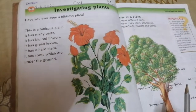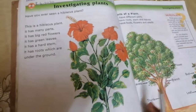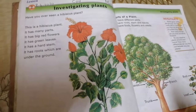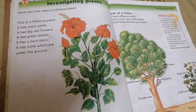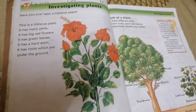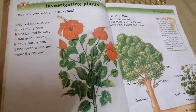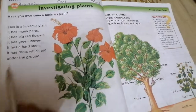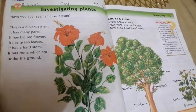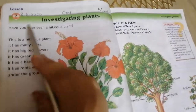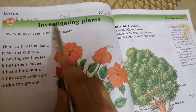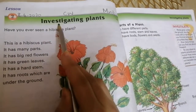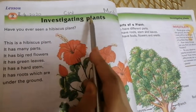I am going to do the reading of this lesson and you have to underline the difficult words with me and repeat with me three times. I am going to start the reading. Lesson two: Investigating Plants.